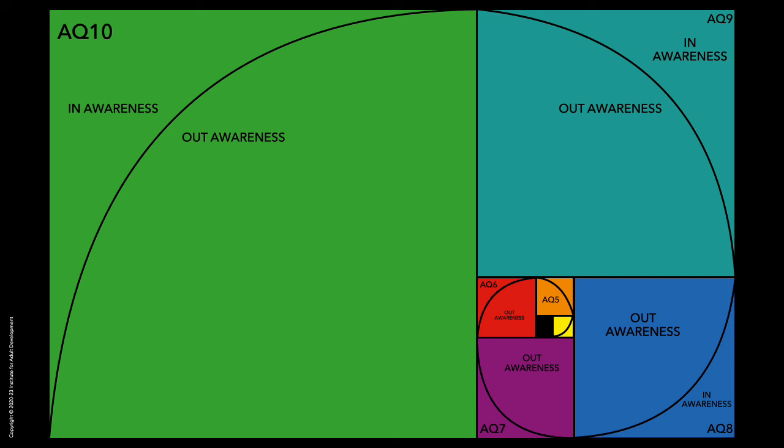It explains why no one so far has been seen to be AQ9 — the sum of their self-awareness will be so great as to be on a higher plane of thinking. Thus, the Fibonacci sequence is the best illustration of vertical development we have. And it's not even vertical.